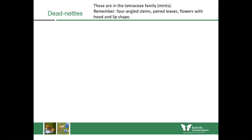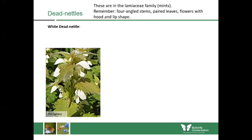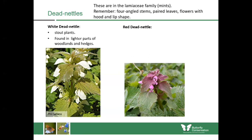Dead nettles are not related to stinging nettles — they get their name because they don't sting, though the leaves often look like nettles. White dead nettles flower early in the year around February or March. They're quite stout plants with really large white flowers, found in the lighter parts of woodlands and hedges. They're very important for queen bumblebees coming out early in the year, especially common carder bees and garden bumblebees which have long tongues. These are part of the Lamiaceae family and have a distinctive square stem.